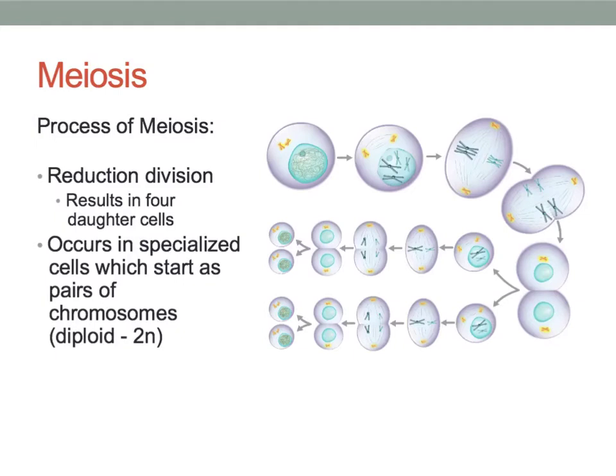Meiosis occurs in specialized cells which start with a full set of chromosomes. A diploid, or 2N, means having pairs of chromosomes.